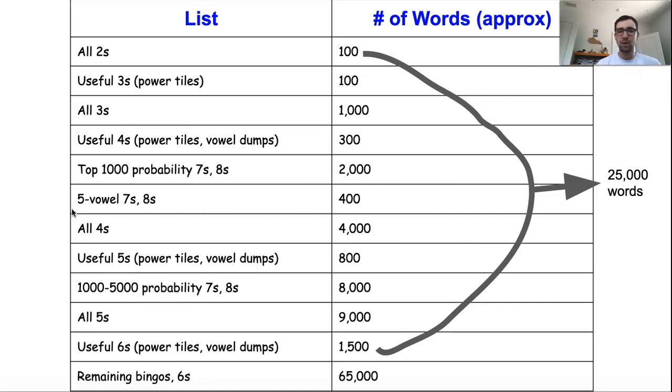After that, I generally recommend players move on to the threes starting with the most useful threes, which I'll explain in just a minute, and then after that moving on to all of the threes. There's about a thousand threes in the current version of the dictionary, so it's a bit more of a substantial list than the twos. It'll take a little bit longer to learn these, but once you know the twos it'll be super useful to know the threes, especially since many threes are built directly off of twos by hooking a letter onto either side.